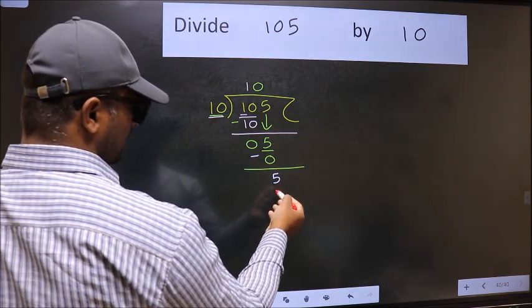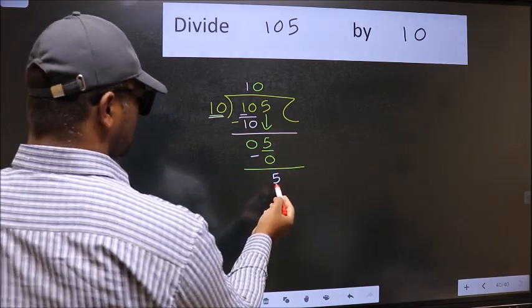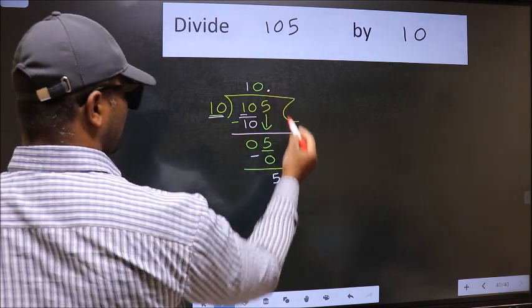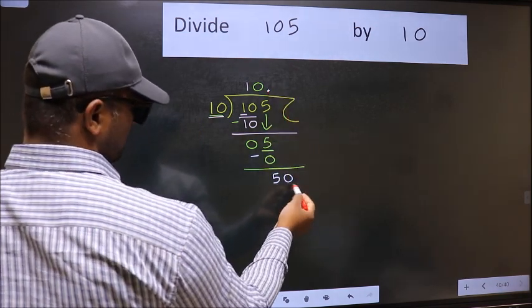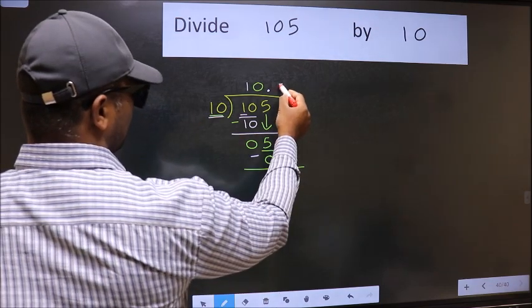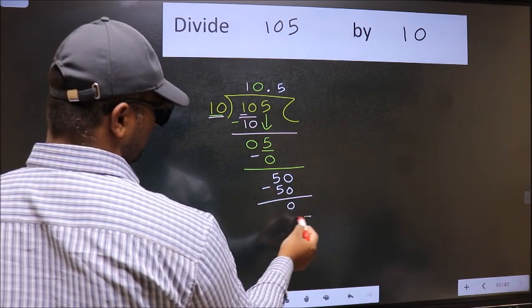Over here, we did not bring any number down. And 5 is smaller than 10. So now we can put dot and take 0. So 50. When do we get 50 in 10 table? 10 times 5 is 50. Now we should subtract. We get 0.